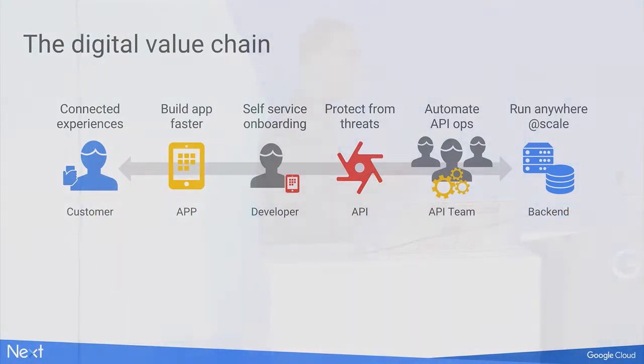An app can be of any kind — a mobile app, a web app, or even a set-top box. There are developers who build those apps using well-curated APIs, which are managed by an API team. This API team comprises API developers who use a platform such as Apigee Edge to manage, secure, and publish those APIs.